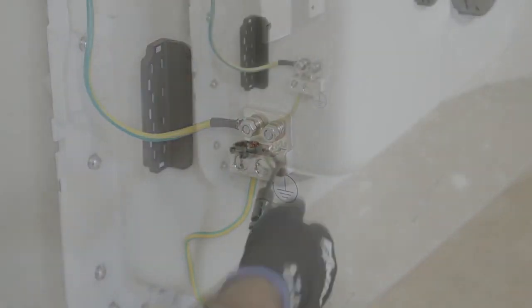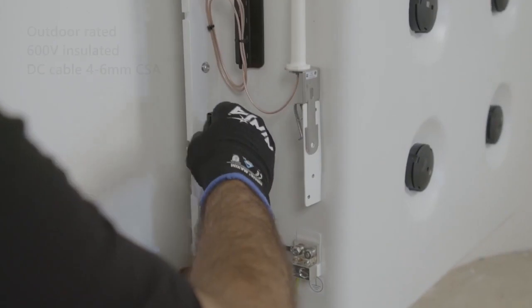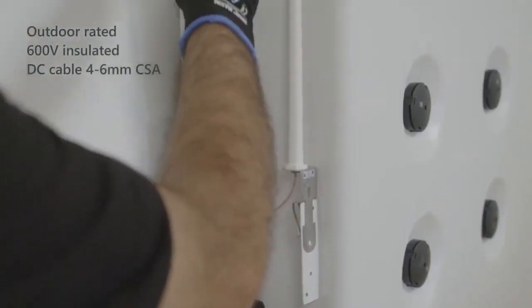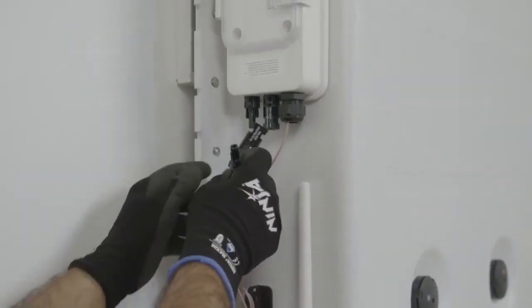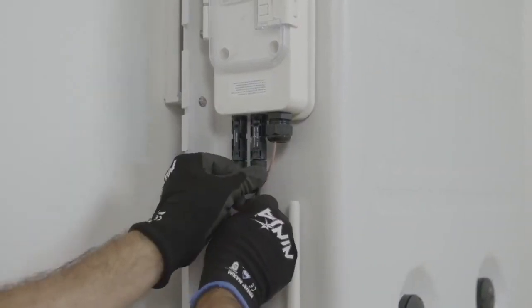Once the earth is in we can then fix the DC. With the battery comes supplied two MC4 connections, so simply connect those to suitable PV DC 600 volt rated cable and connect them into the positive and negative associated terminals.